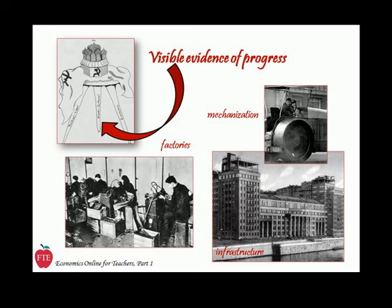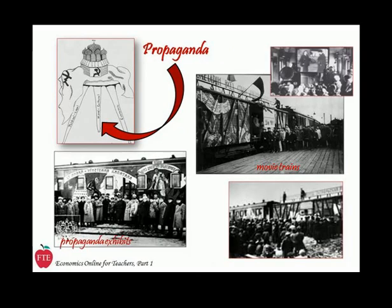For example, Lenin's time in Western Europe had convinced him of the value of electrification as a first step in creating wealth, and he carried that conviction into setting priorities for the industrialization of Russia. So one of the first visible evidences of progress was the electrification of cities and factories. While the peasants' own lives may not have changed much, under Lenin they could see progress being made. Lenin was a master propagandist — he sent out propaganda trains, for example, to show movies of the great strides being made.